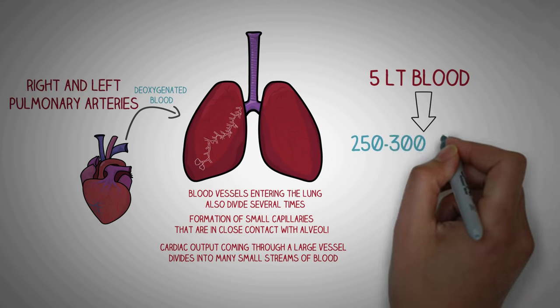This oxygenated blood is then sent to the heart, which pumps it to the whole body where oxygen is utilized. So this was a brief description of the human respiratory system. I hope you found this video helpful — make sure to subscribe to our YouTube channel and like our page for all the flashcards, mnemonics, and upcoming content. Thank you so much for watching.